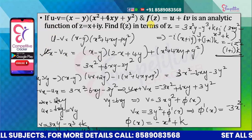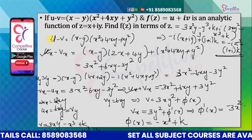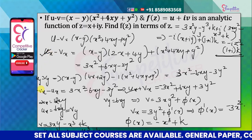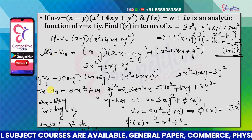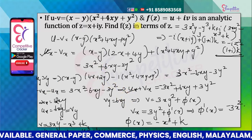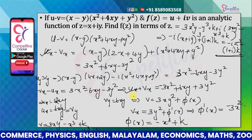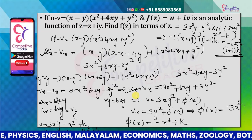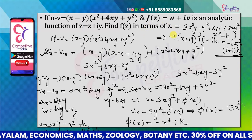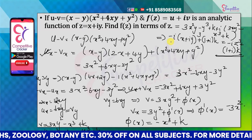So u minus v is given. You will be able to find u and v using the Cauchy-Riemann equations — differentiate with respect to x and with respect to y, then equate. You will then substitute into f(z) equals u plus iv with z equals x plus iy to express f(z) in terms of z.